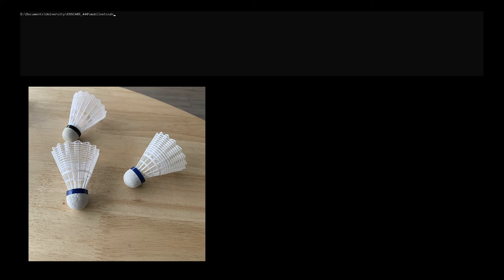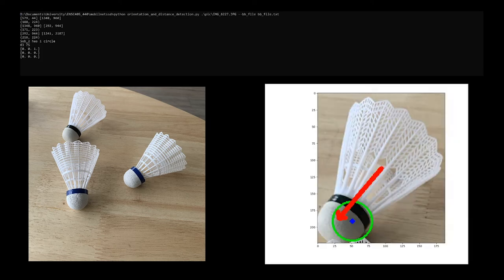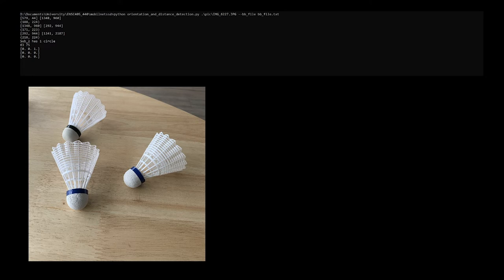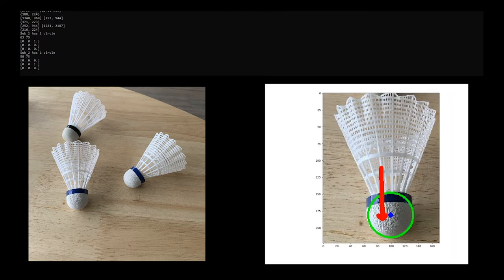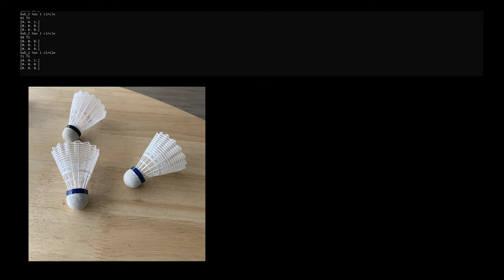Next, we have to determine the orientation of the shuttlecock. The left shows the original image, and the right shows the output of the algorithm we used to find the orientation, which is shown here by the red arrow.